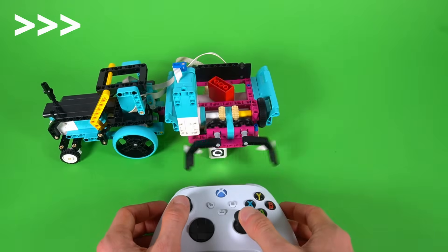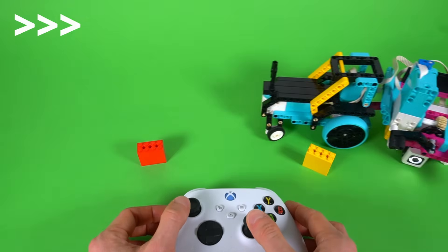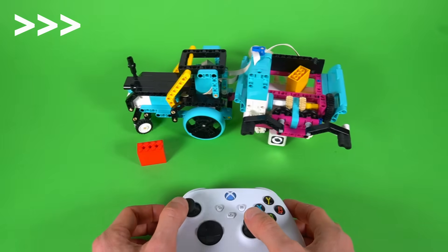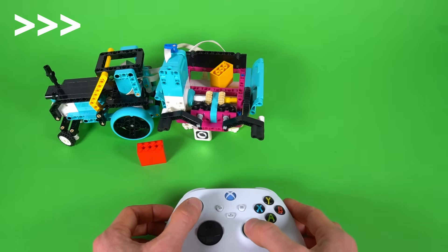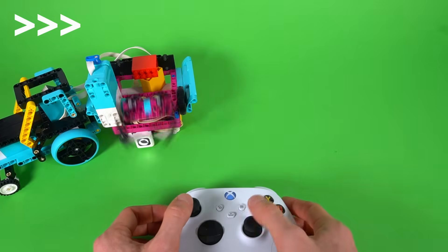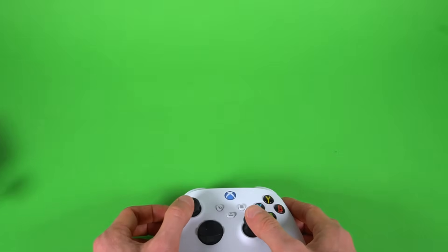This model introduces the challenge of building a grab-and-lift mechanism with a single motor, and programming it to make intelligent decisions based on sensor input. But in order to harvest crops, you must grow them first.